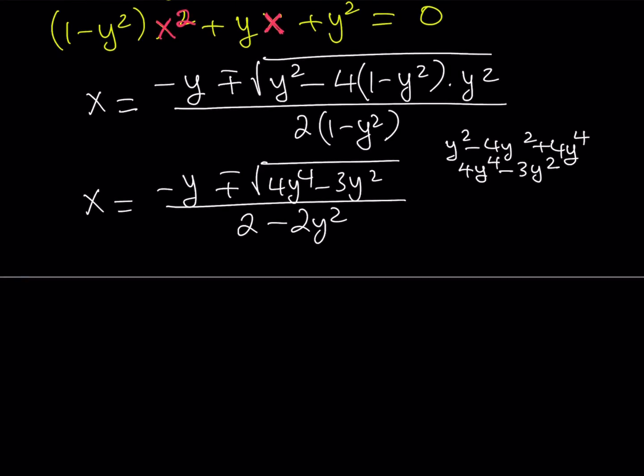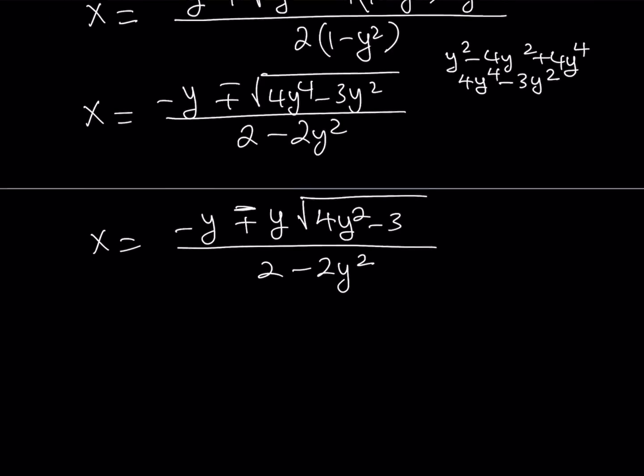Since we want x and y to be integers, how is it possible that this is going to be an integer? Notice that we can actually pull out the y squared from here. So write this as x equals negative y plus minus, if you pull out a y, the absolute value will be taken care of by the plus minus. And inside the radical, you have 4y squared minus 3. So now the y is out and what I have under the radical is much simpler.